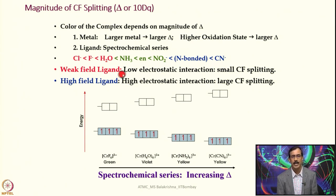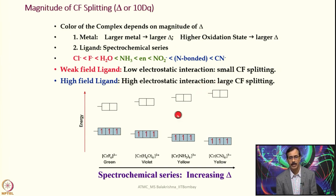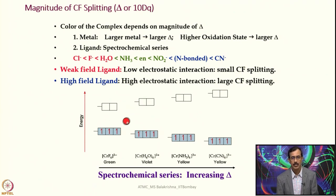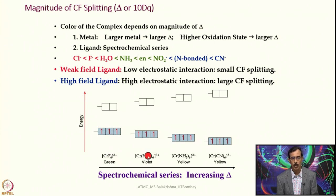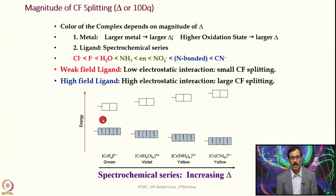In the spectrochemical series, among a few ligands: chloride is the weakest, then fluoride, then water, then ammonia, ethylenediamine, nitrite (N-bonded), and cyanide — with both crystal field splitting and ligand field strength increasing steadily along the series. Weak field ligands give low electrostatic interaction and thus small crystal field splitting, while high field ligands give large electrostatic interaction and large crystal field splitting. This is the origin of the spectrochemical series. For hexachromium(III) octahedral complexes, as ligands change from fluoride to water to ammonia to cyanide, the color changes and the energy separation steadily increases, showing that cyano complexes are much more stable compared to halo complexes.